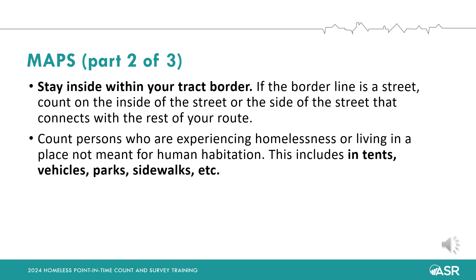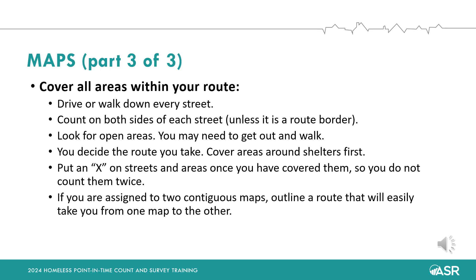If there's someone moving back and forth across the street, you should count them. Please cover all areas within your route. Be sure to drive or walk down every street. Count on both sides of the street unless it's a route border. Look for open areas — you may need to get out and walk. You decide the route you take; that may depend on traffic or where shelters are located. Be sure to cover areas around shelters first. It's a good idea to put an X on streets and areas once you've covered them so you don't count them twice. If you are assigned to two contiguous maps, be sure to outline a route that will easily take you from one map to the other.